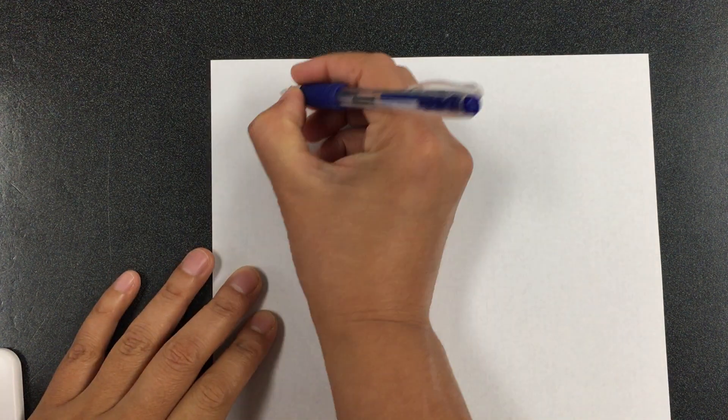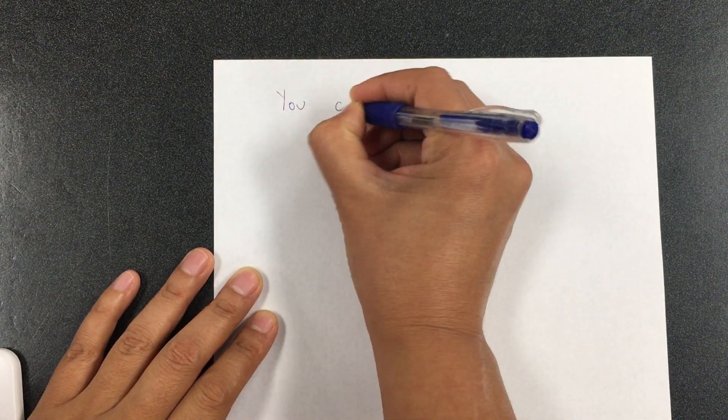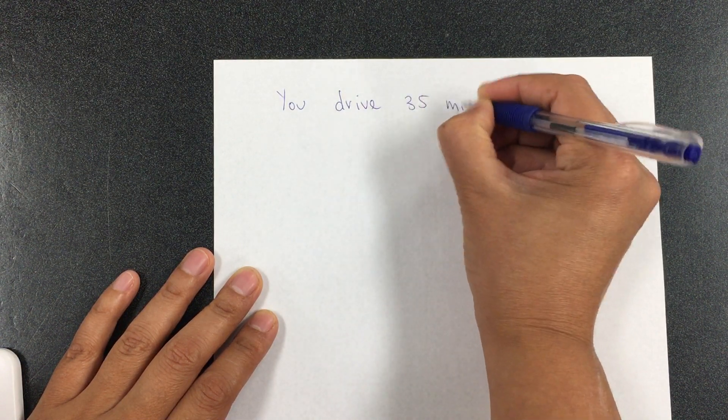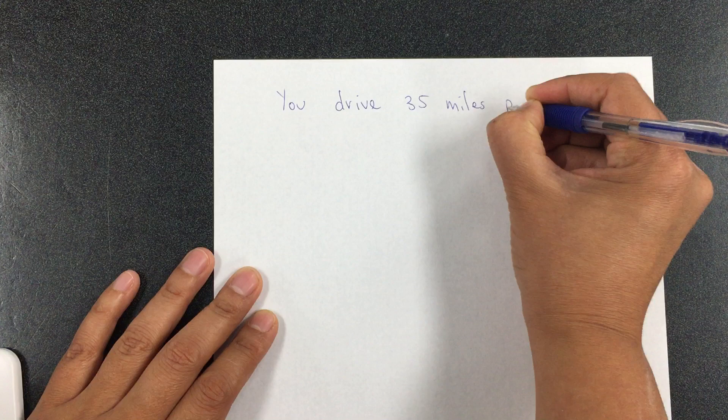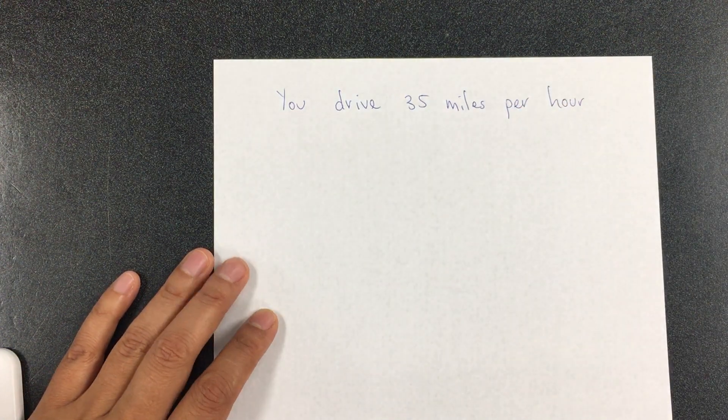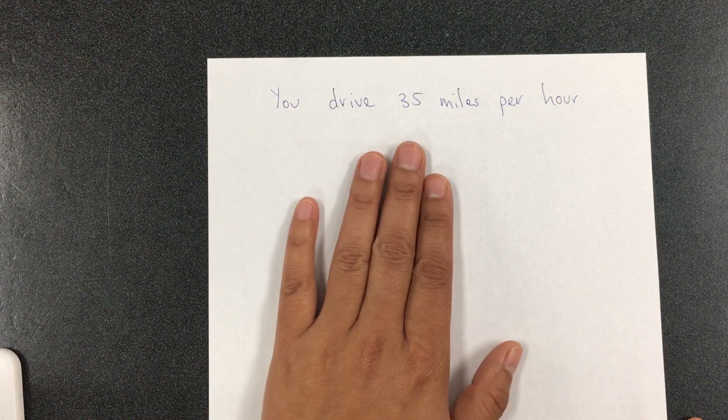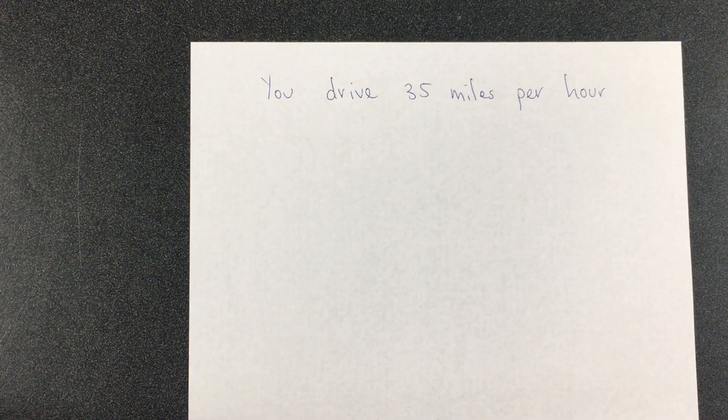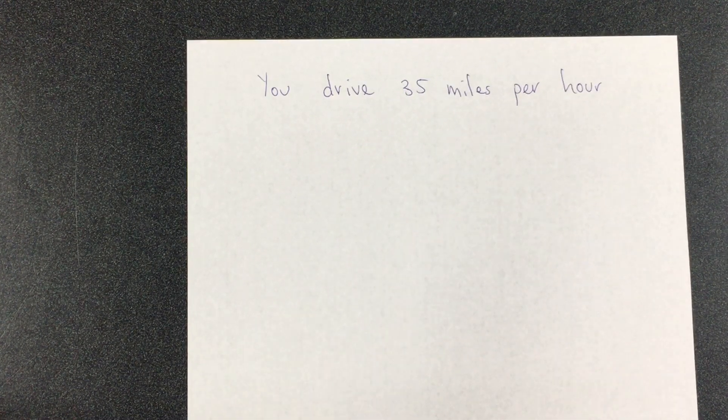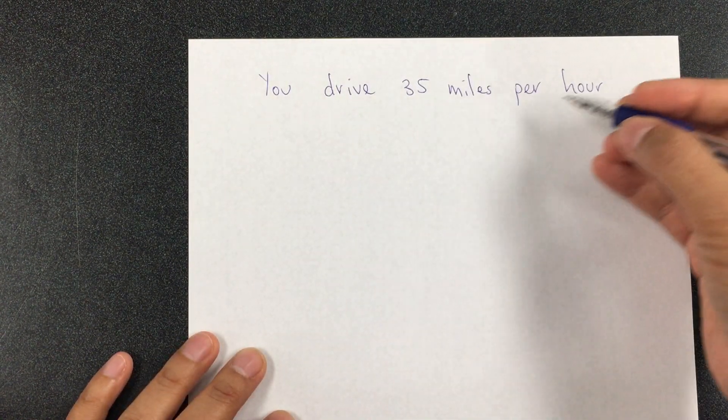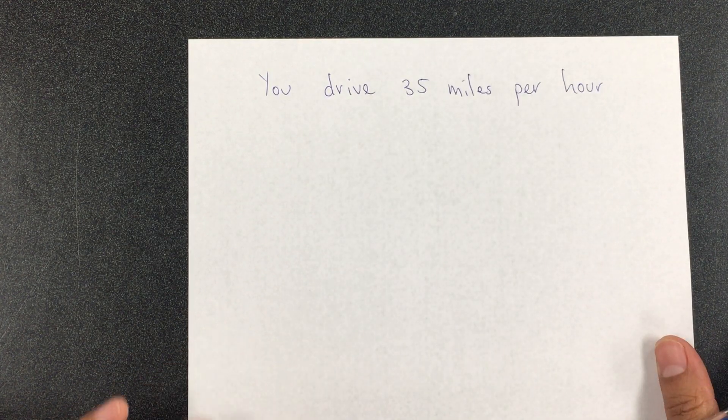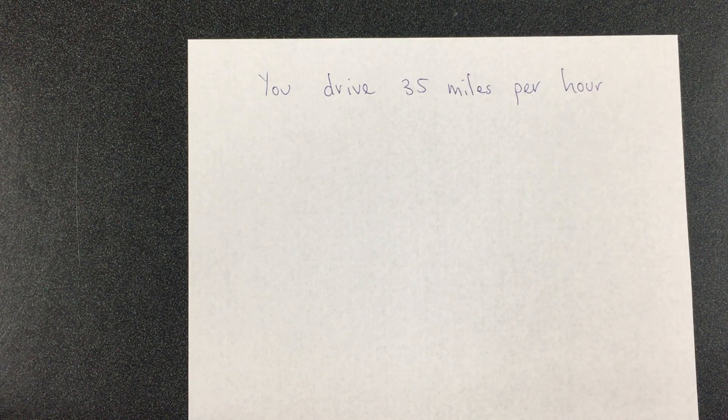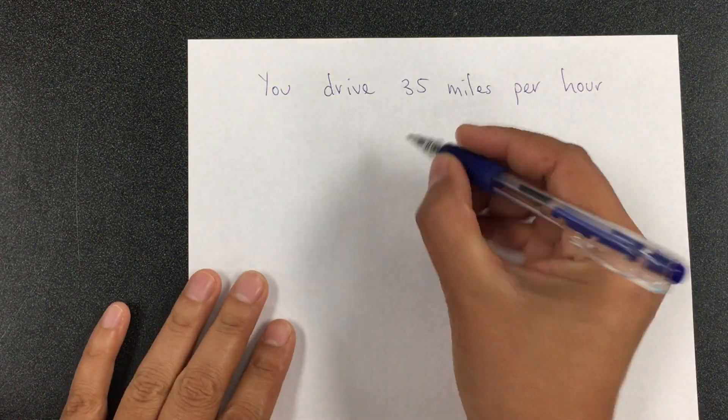The first one says, you drive 35 miles per hour. How would that graph look like? This type of graph would be a continuous graph because you're driving at a constant 35 miles per hour. Let's say that traffic is heavy on the freeway and you're just driving at that rate.